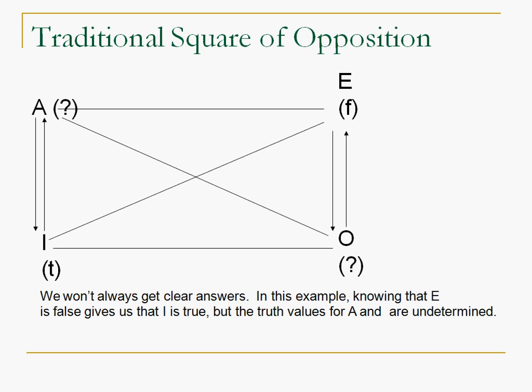Okay? If we know that E is false, right, we can use the contradictory to make I true. All right? But truth doesn't go upward. And if E is false, A could still be false. And if I is true, O could still be true. Right? Both of them can't be false, but both of them could be true. So, O and A, in this particular case, have undetermined truth values.